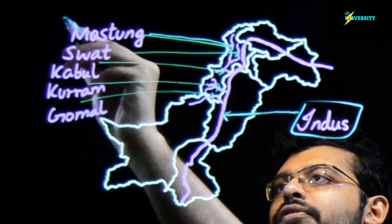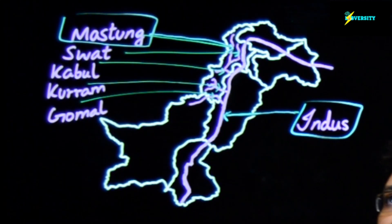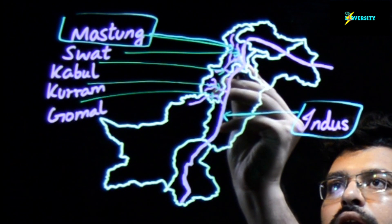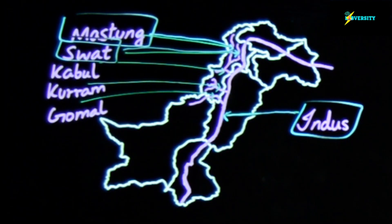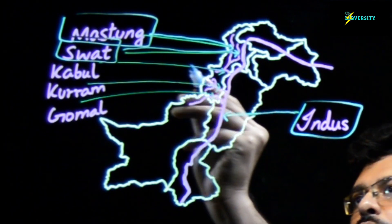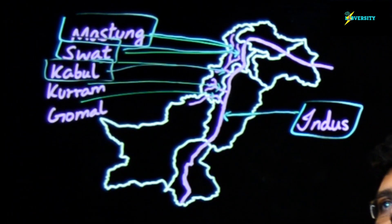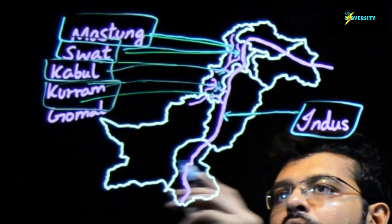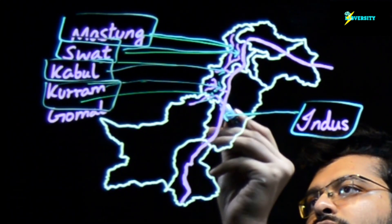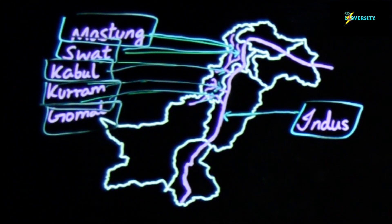The first one over here is River Mastoon, then we have River Swat, this one is called River Kabul, this one over here is called River Kurram, and lastly this one over here is called River Gomal.